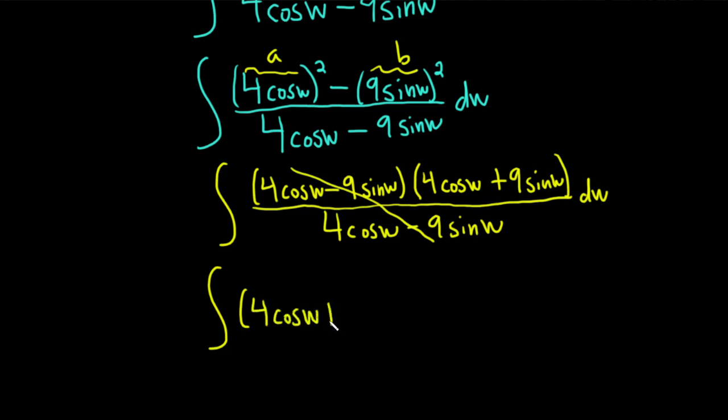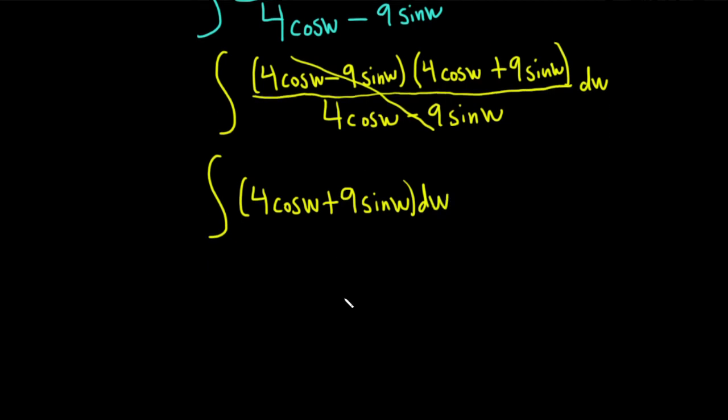So we have 4 cosine w plus 9 sine w dw. Okay, now we just have to integrate this.